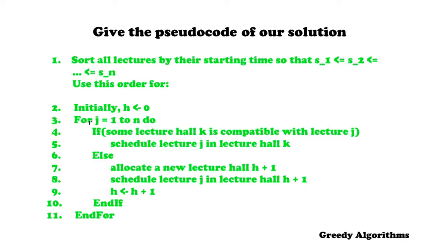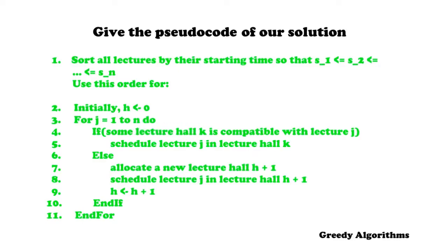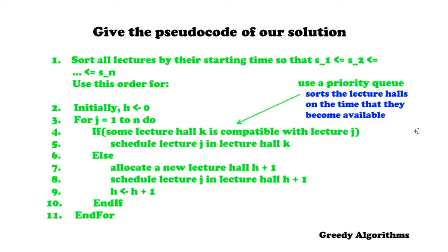There's something a bit vague about 'some lecture hall k' — this could mean looping over all lecture halls, which is not efficient. As mentioned, we're only interested in the lecture hall that becomes available first. We can handle this with a priority queue, which sorts the lecture halls by the time they become available. The hall at the front becomes available first, and we only need to check that one — if it's compatible, we assign it; if not, none of the others will be either.